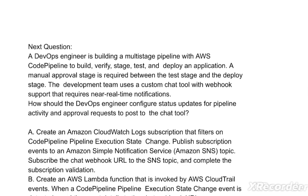Next question: a DevOps engineer is building a multi-stage pipeline with AWS CodePipeline to build, verify, test, and deploy an application. A manual approval stage is required between the test stage and the deploy stage. The development team uses a custom chat tool with webhook support that requires near real-time notifications. How should the DevOps engineer configure status updates for pipeline activity and approval requests to post to the chat tool?